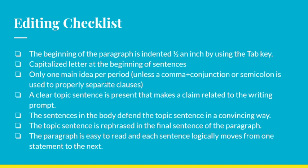Finally, double-check with an editing checklist. The beginning of the paragraph is indented half an inch using the tab key. Capitalize the letter at the beginning of each sentence — there is no reason your sentences should not be capitalized. Only use one main idea per period unless a comma plus a conjunction or semicolon is used properly to separate clauses; if you don't know what this is, Google it. A clear topic sentence is present that makes a claim. The sentences in the body defend the topic sentence in a convincing way. The topic sentence is rephrased in the final sentence. And very importantly, the paragraph is easy to read and each sentence logically moves from one statement to the next. Put all of these features together and you'll have an awesome paragraph — use this checklist and successfully apply it to creating your own paragraphs.